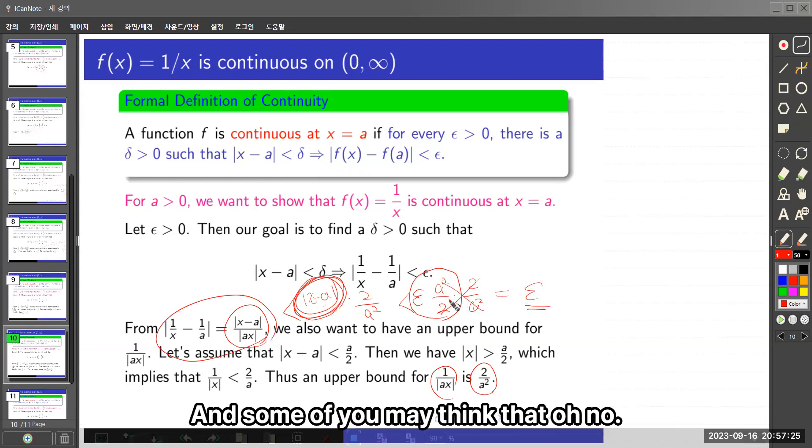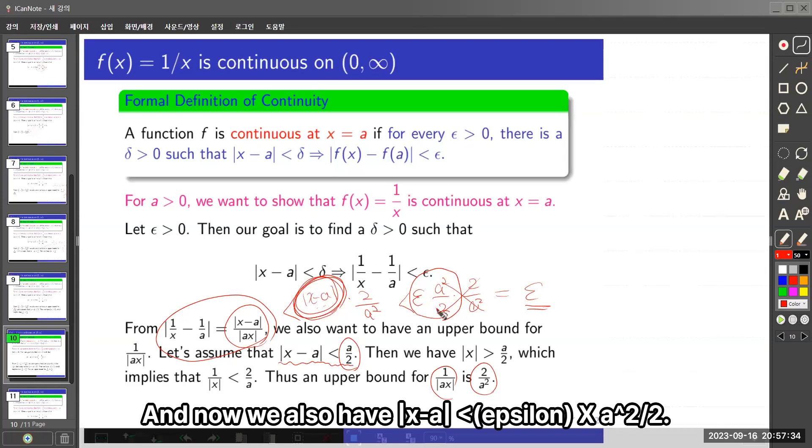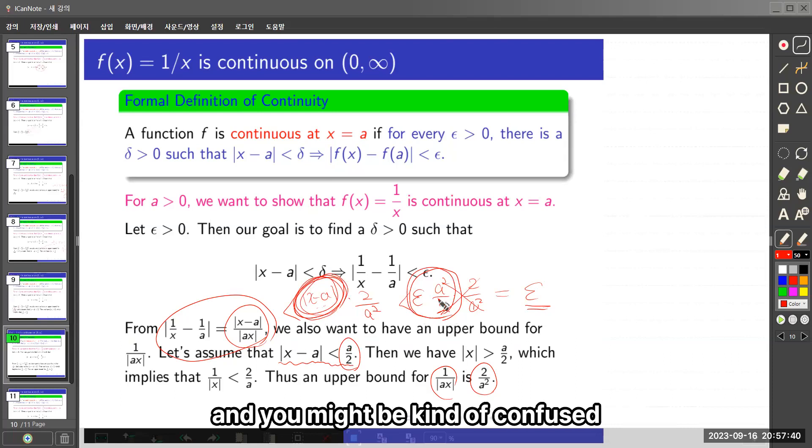And some of you may think that, oh no, we actually have the absolute value of x - a less than a/2, and now we also have |x - a| less than epsilon times a²/2. And you might be kind of confused,